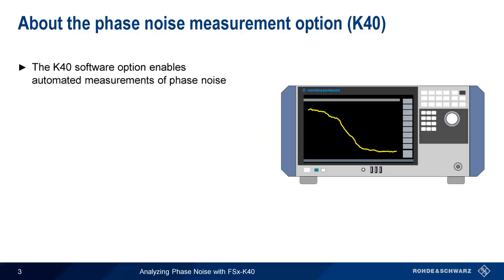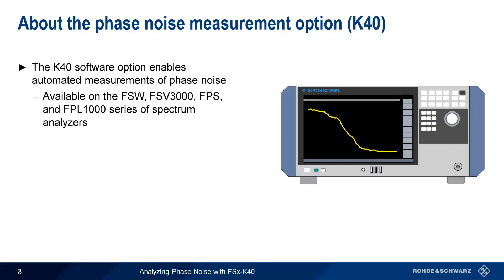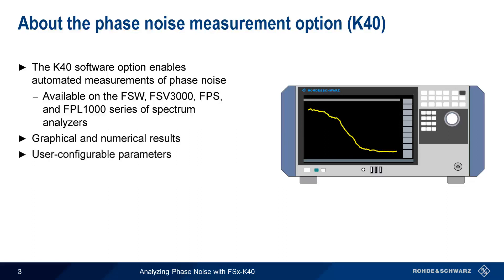The K40 phase noise measurement option enables simple, automated measurements of phase noise and is available on the FSW, FSV3000, FPS, and FPL1000 series of spectrum analyzers from Rohde & Schwarz. In this presentation we'll be using an FSW, but the GUI and functionality is essentially identical across all instrument families. The K40 option provides both graphical and numerical results and allows the user to configure a wide variety of measurement and analysis parameters, including a variety of more advanced features.